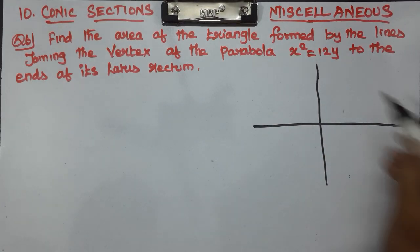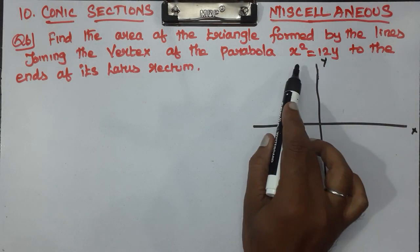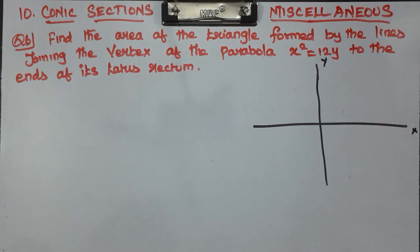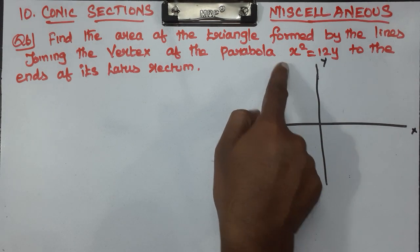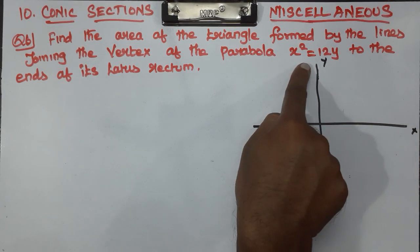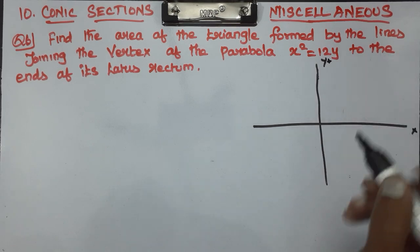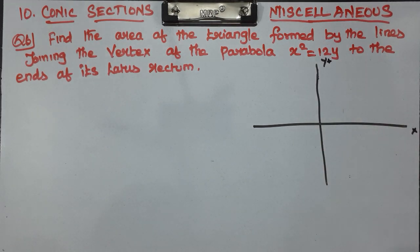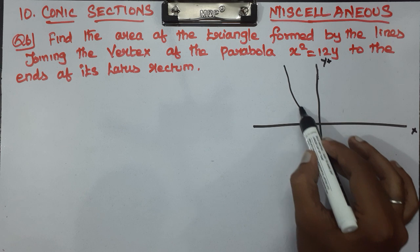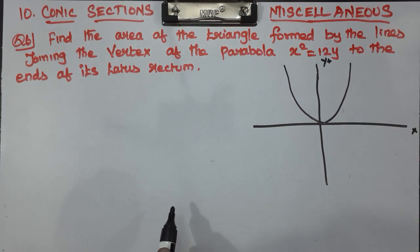This is the x-axis, this is the y-axis. The parabola equation is x² = 12y. So what axis is the parabola along? The y-axis. Since y is positive, the parabola opens upward along the positive y-axis. We have the parabola drawn here.